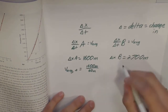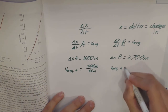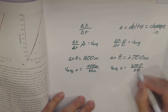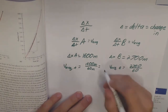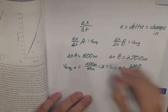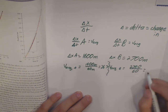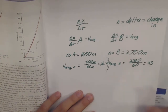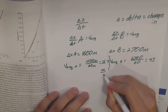The average velocity for bear B equals 2,700 over 60. Plugging those into your calculator, you get 1,600 over 60 equals 26.7, and 2,700 over 60 equals 45. These are both in meters per minute.